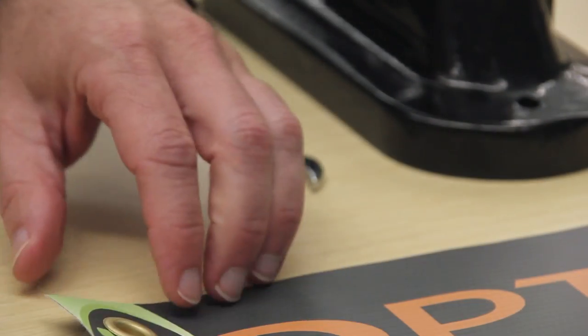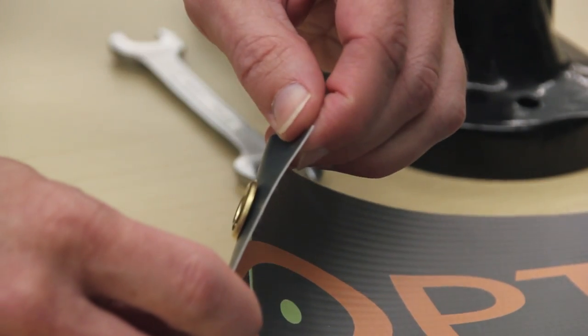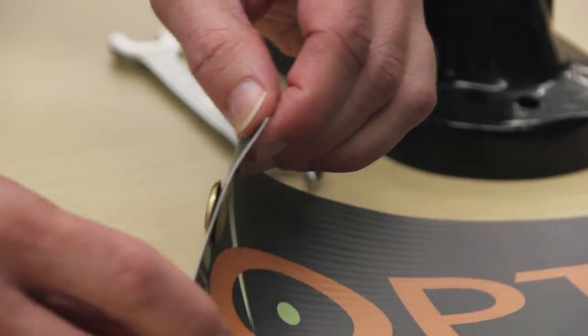If the adjustment screw is a little off, your grommets will not secure tightly. But this is an easy adjustment.